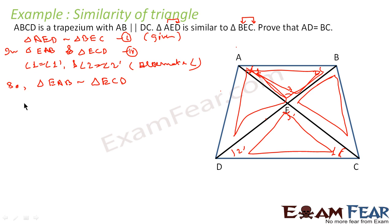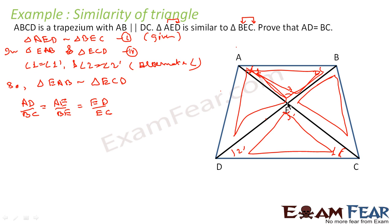If we can prove ED is equal to EC, then looking at the ratios: since triangles AED and BEC are similar, we get AD/BC = AE/BE = ED/EC. So we need AD/BC to equal 1, meaning we need to prove either AE equals BE, or ED equals EC. Any one of them will be sufficient.